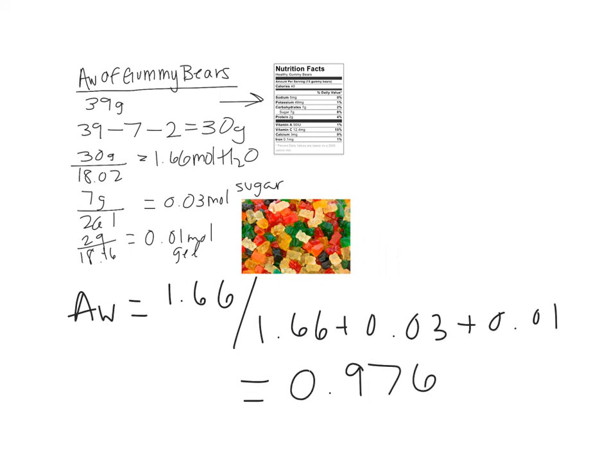0.976 is a pretty high number, close to 1.0, which actually makes sense for gummy bears since they're generally quite chewy and almost gelatin-like — similar to jello — so they should have a water activity number that's pretty close to that of water.